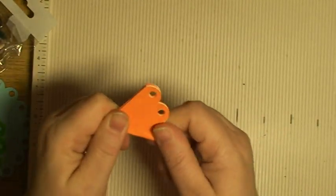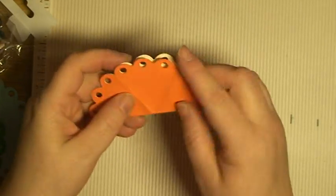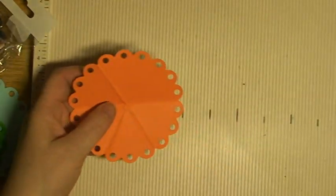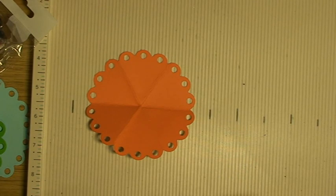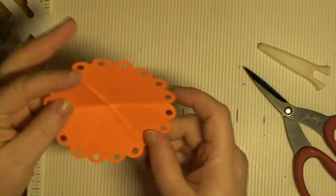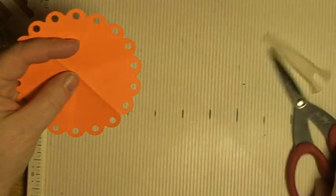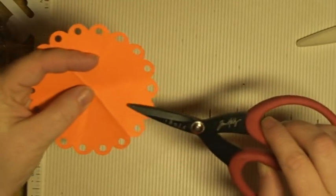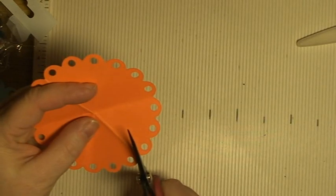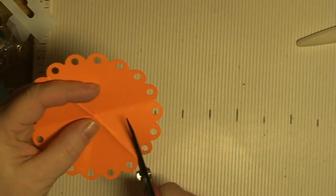So now I've got a folded circle like this, and now it's all up to me to just snip away six of these at once.